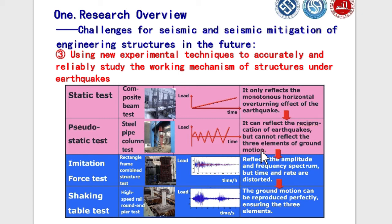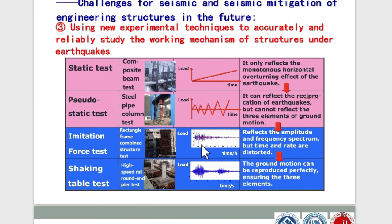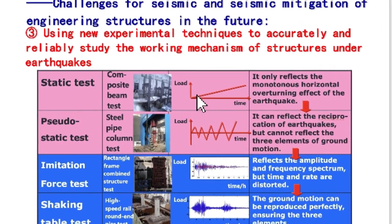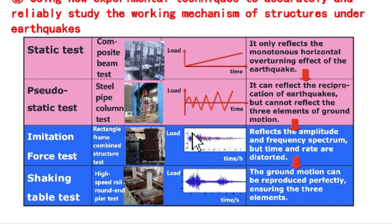Another new technology developed in recent years is called hybrid simulation. It means that some parts of the structure are numerically simulated on a computer while other parts are physically tested in the lab. At the boundary between the two, actuators are used to apply displacement or force. This numerical and physical hybrid simulation technology is a promising new approach in structural testing.